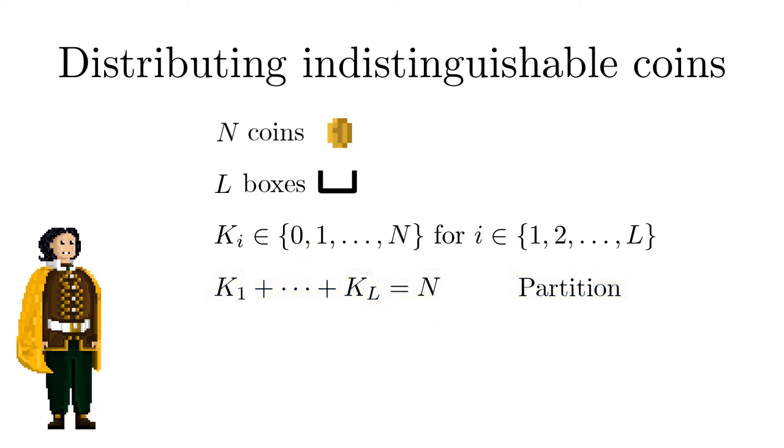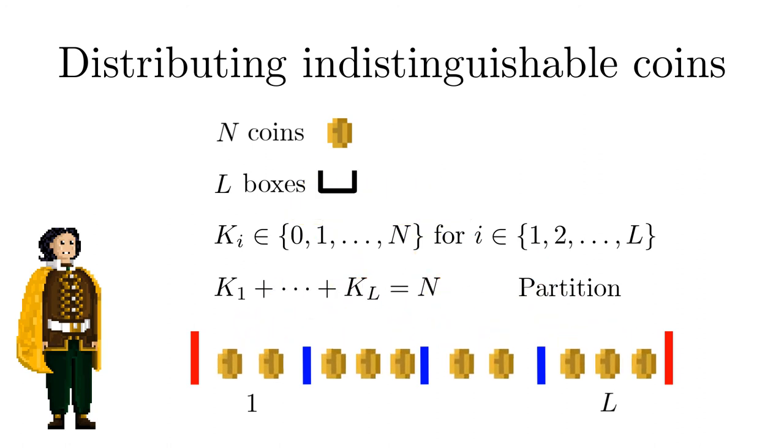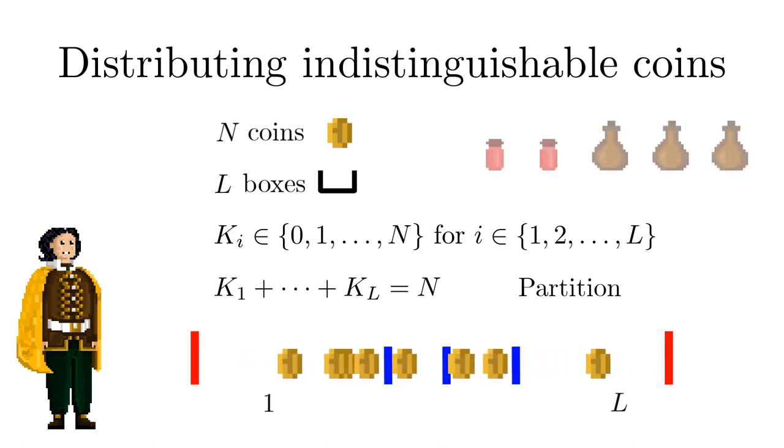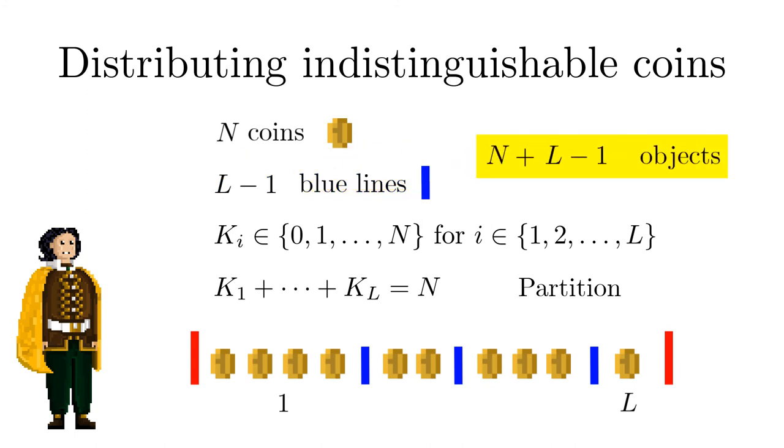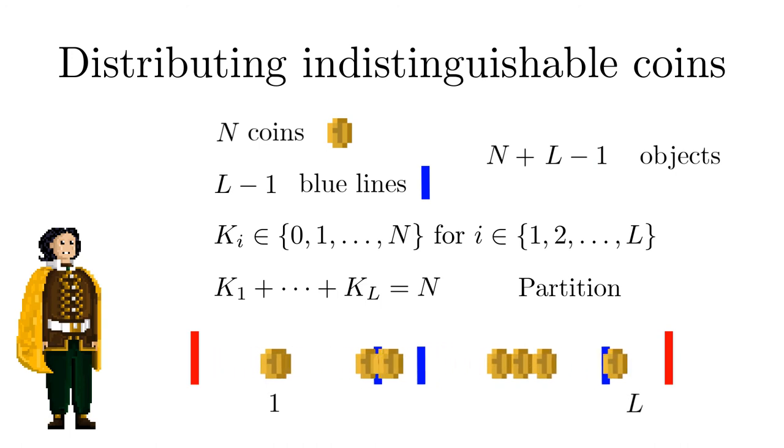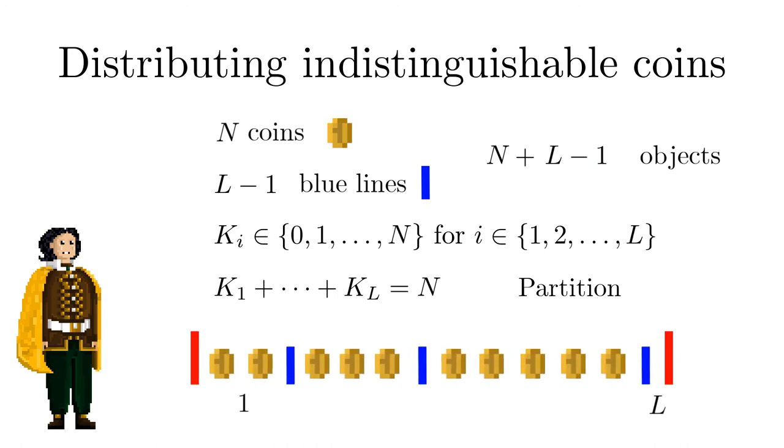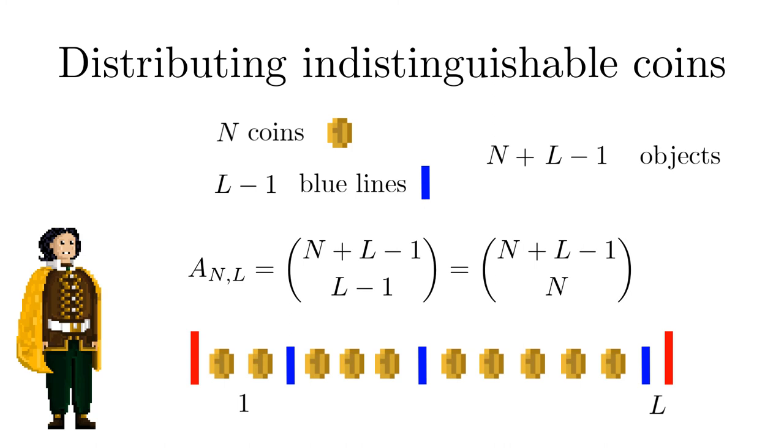A clever way to represent the possibilities graphically is to draw two red vertical lines on the x-axis. The first marks the left boundary of the first box and the second one stands for the right boundary of the last box. In between are L-1 blue vertical lines indicating the boundaries between adjacent boxes. The coins in the boxes are symbolized by small circles all lined up on the x-axis. Now it's just like the arrangement problem with two colors we had before. There are N circles and L-1 blue lines. In total N plus L minus 1 objects. Each combination of circles and lines on the x-axis is a valid representation of our occupation number problem. And vice versa. From the previous slide we therefore conclude the desired number of distributions.